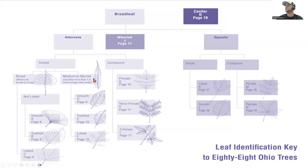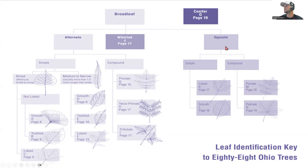Once we've identified broad or medium-to-narrow, we determine whether it's lobed or not lobed. Lobed leaves have points sticking out — we call these lobes. Non-lobed leaves have no points at all, or they come to just one point. On opposite leaves, the lobed ones have multiple points coming off, while the non-lobed ones point straight out.